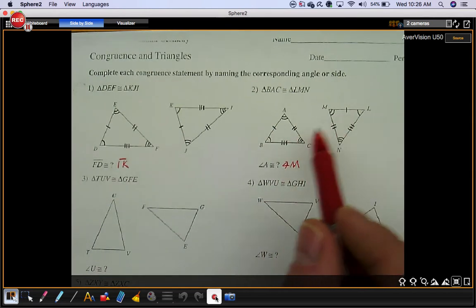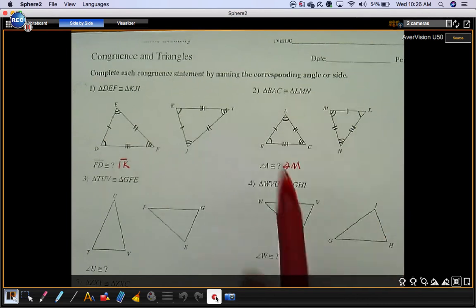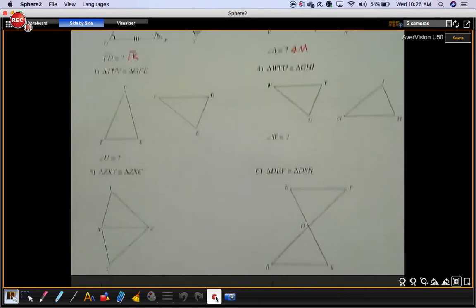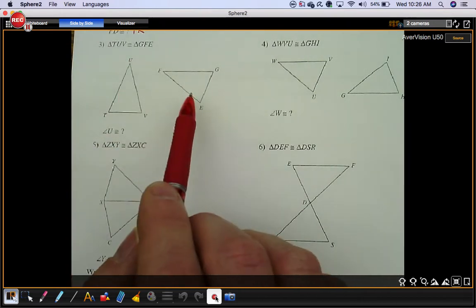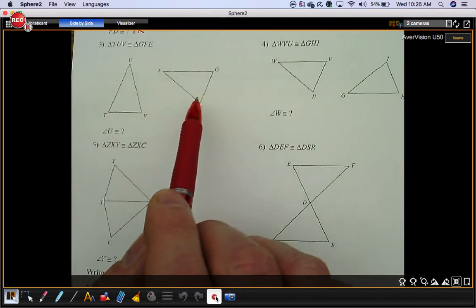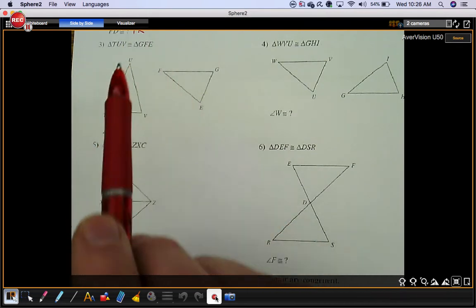You can look at the picture since the marks are there, or you can just look at the statement. It's probably a little bit easier, a little bit more efficient. So when you come down here to number three, they're telling you that triangle TUV is congruent to triangle GFE. There's no marks here, but the statement tells you which six things go with each other.